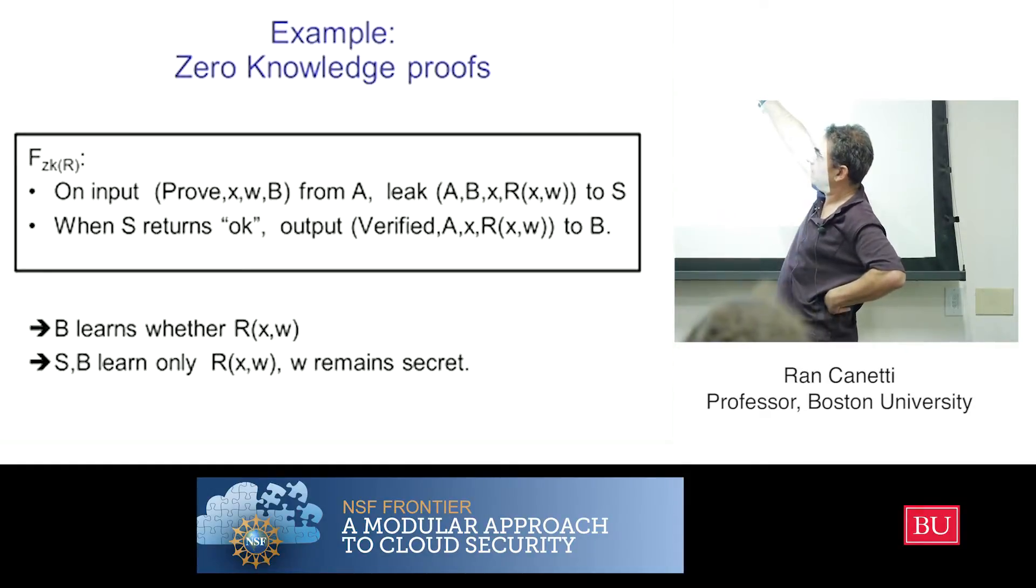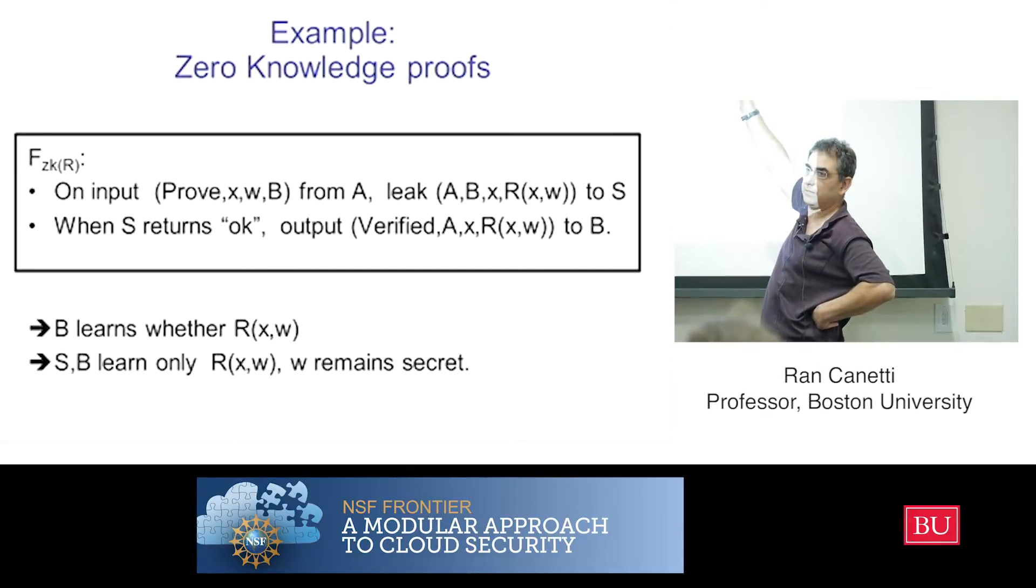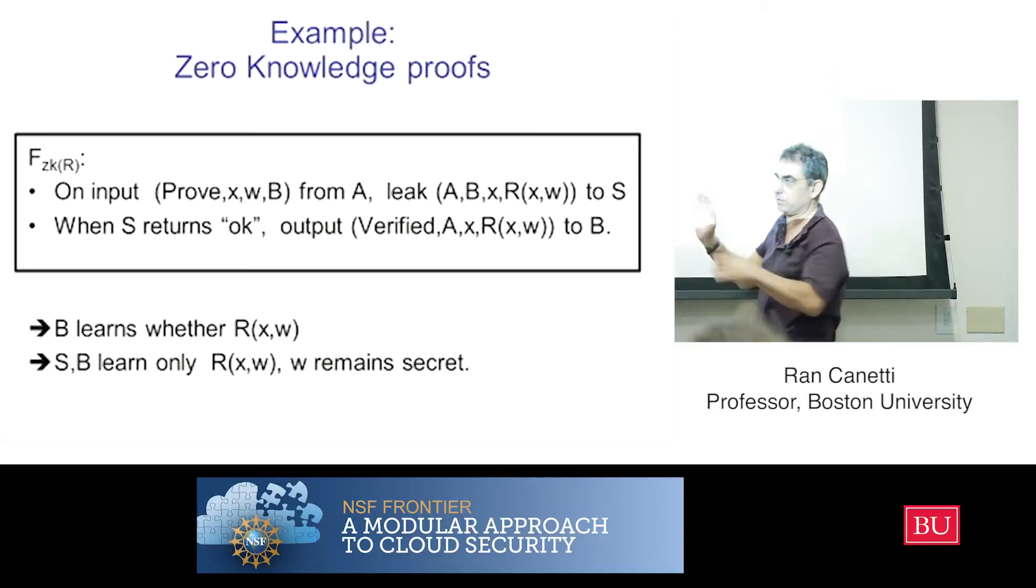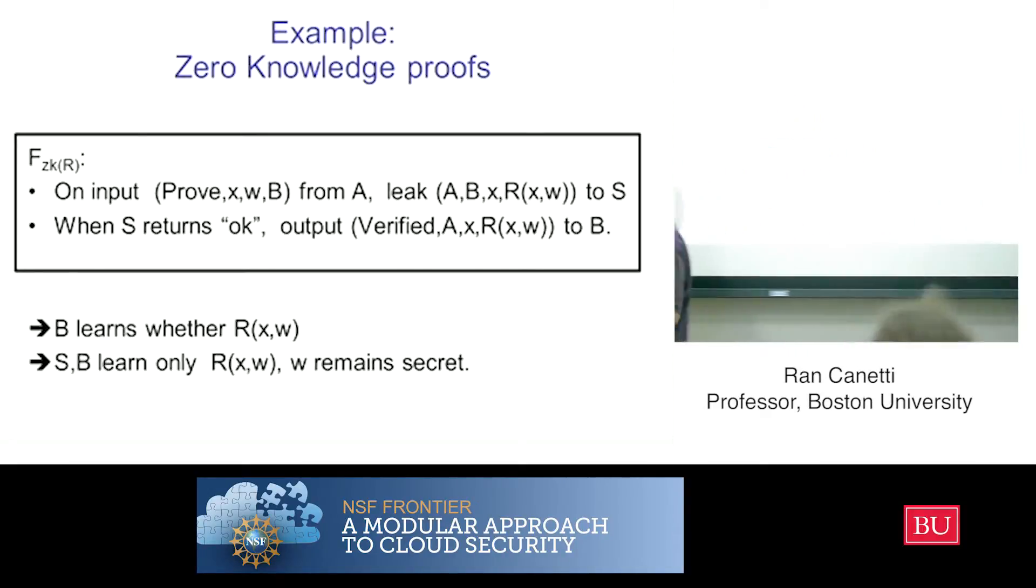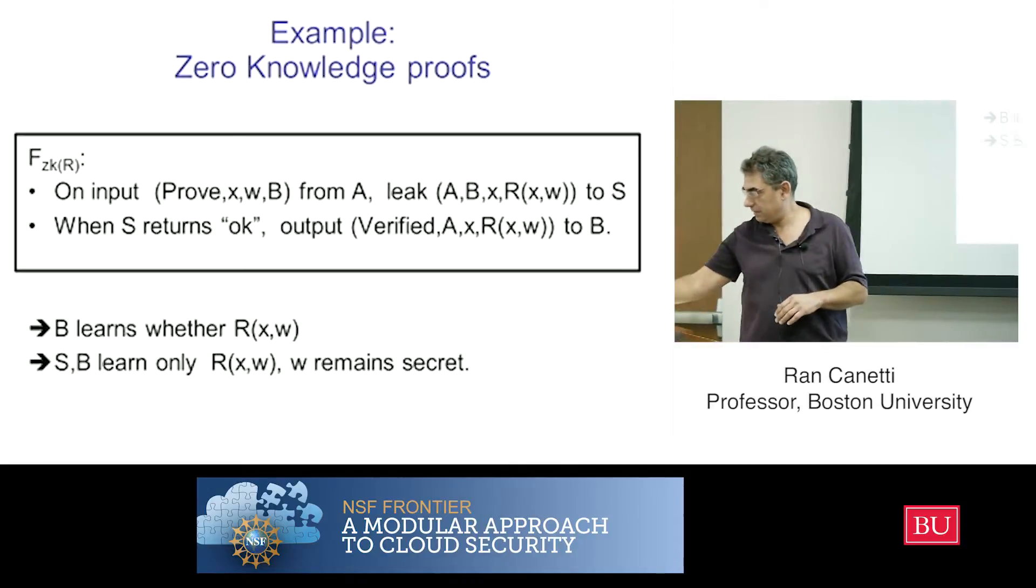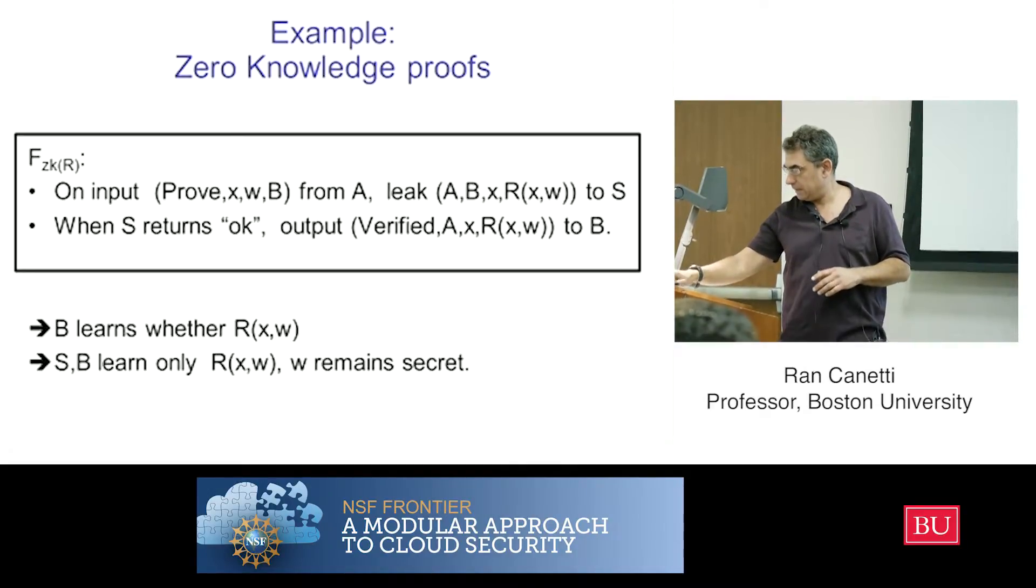So in the ideal service, you get exactly what you want. Ideally, in zero knowledge, the receiver gets to know for sure that there is such a w. And the sender knows that this w is not revealed anywhere. So that's zero knowledge.